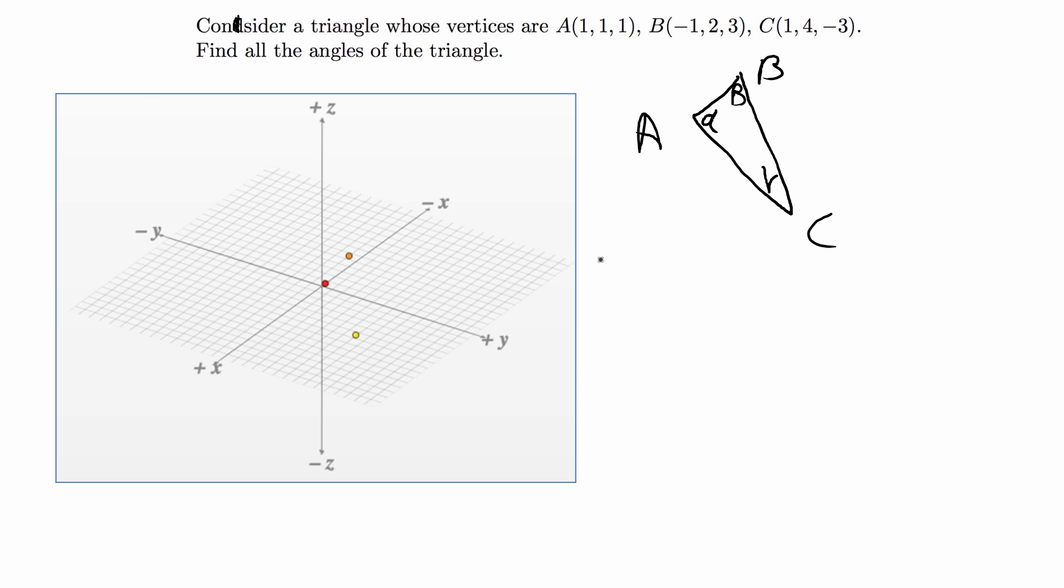Hey guys, in this video I'm going to go over this calc 3 problem. It says consider a triangle whose vertices are A which is (1,1,1), B (-1,2,3), and C (1,4,-3), which are these three points that I have plotted on a three-dimensional graph.